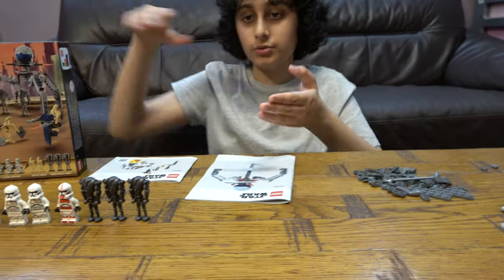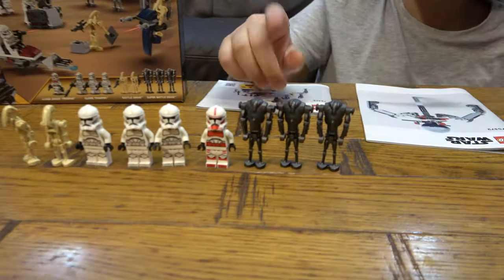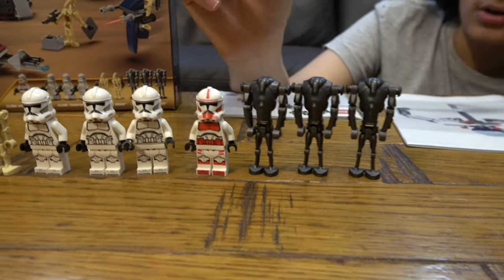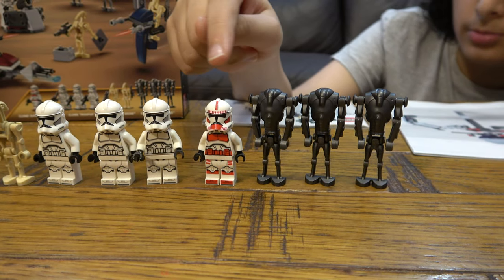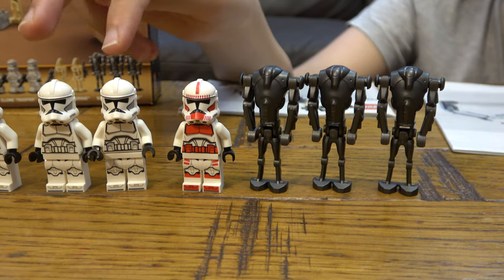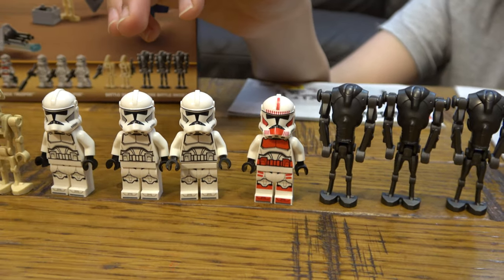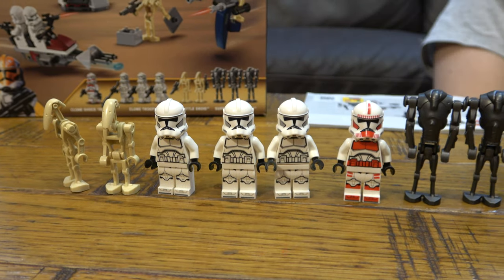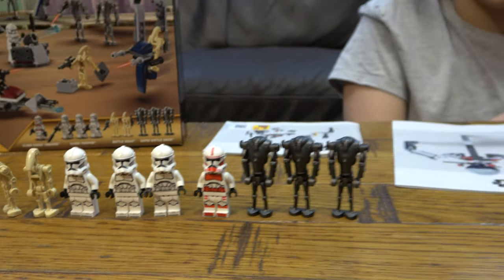So first we have the minifigures: three B2 battle droids in gunmetal gray, one shock trooper phase two, three phase two plain troopers, and two B1 battle droids. And here are the pieces sorted out for the set.